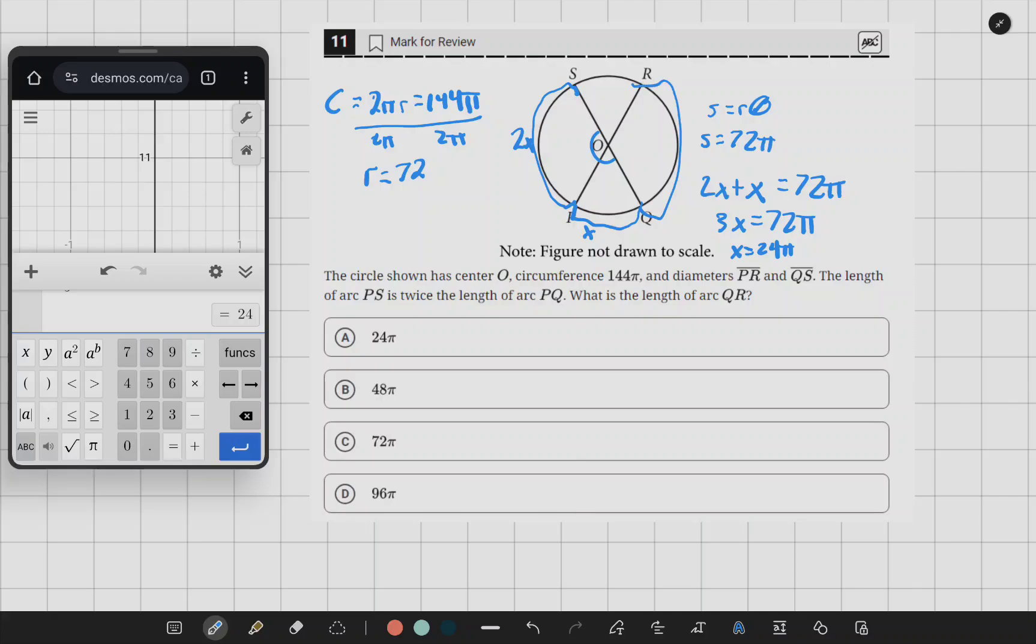which is the equivalent of PS. So that would be 2x. We would just multiply that by 2, and that gives us 48π, which is B.